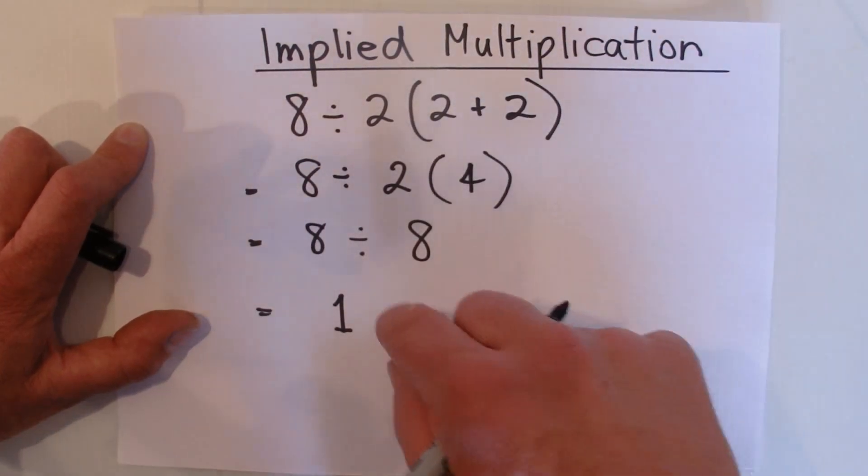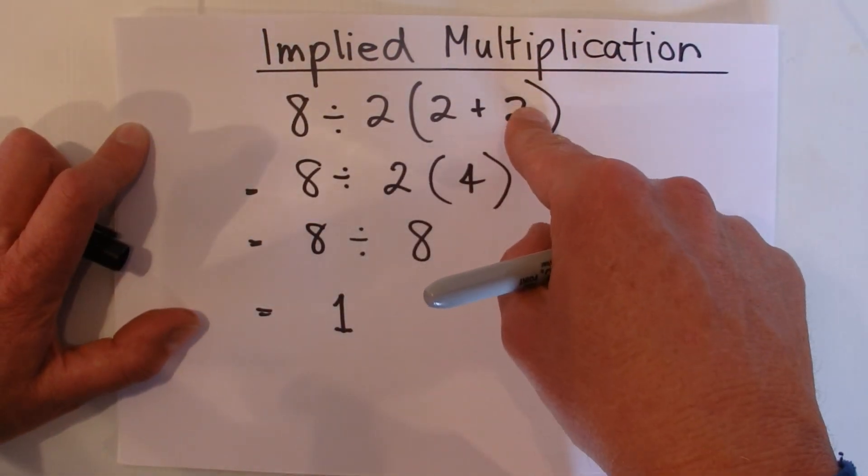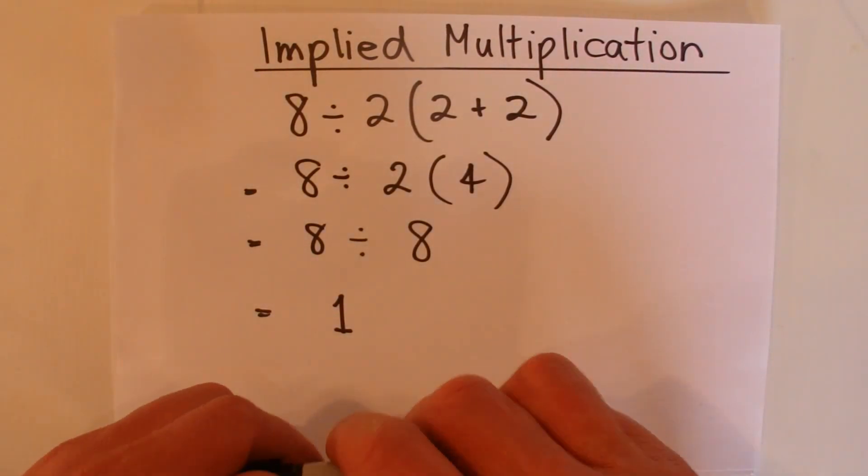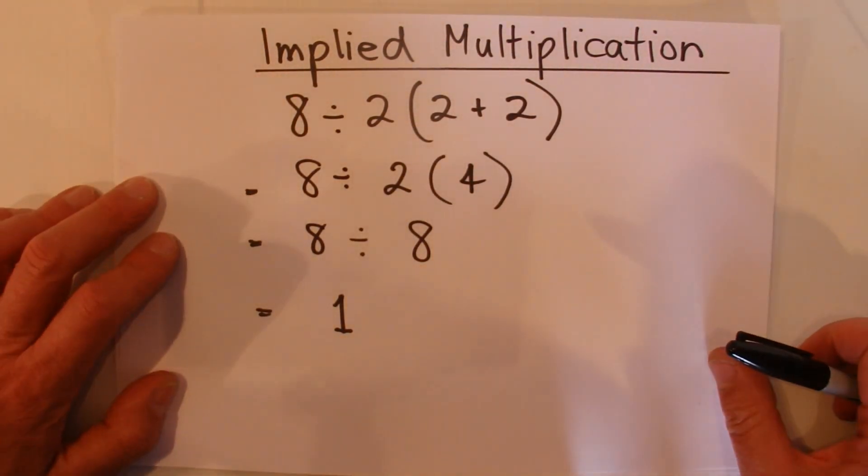So using the Implied Multiplication Principle and applying that to this equation, we end up with the answer of 1. I hope you've enjoyed this video. Thanks for watching and goodbye for now.